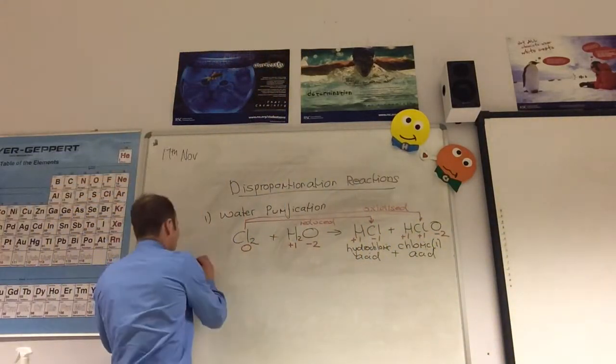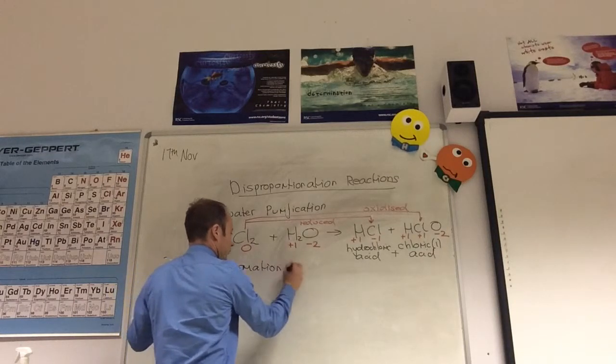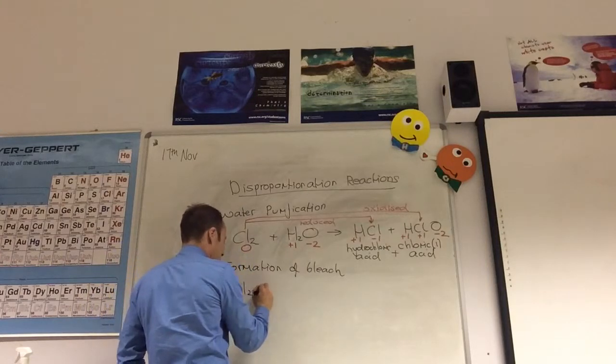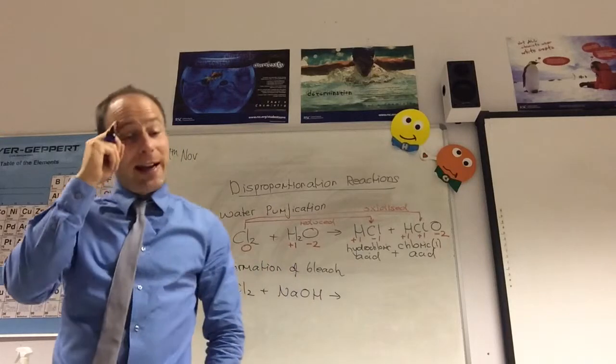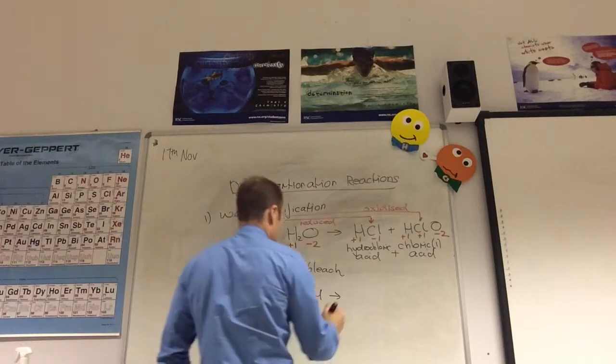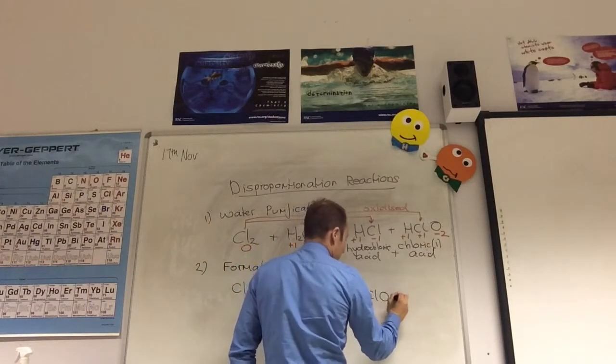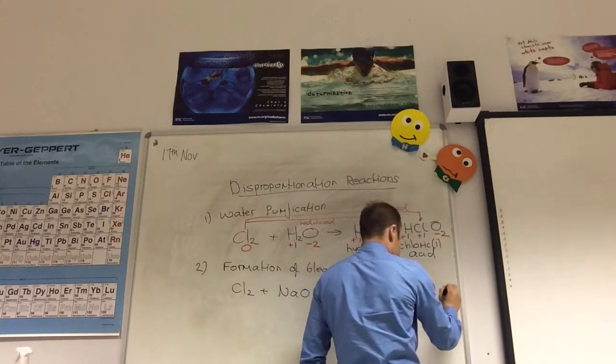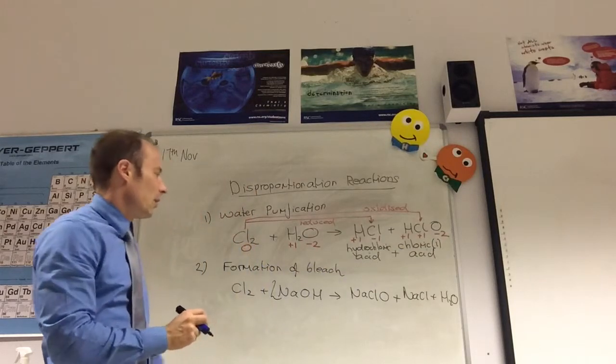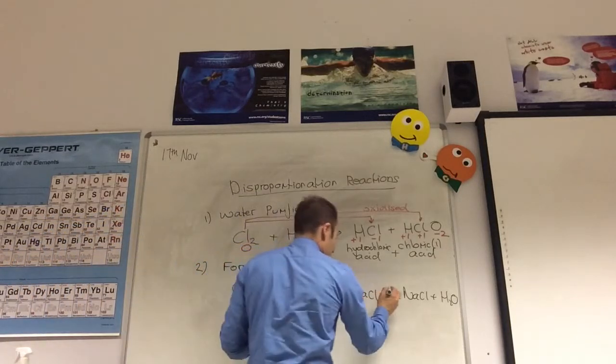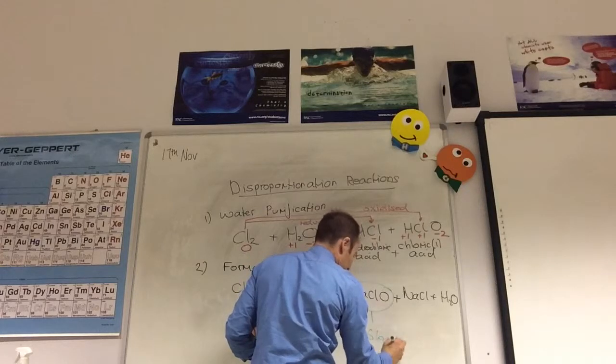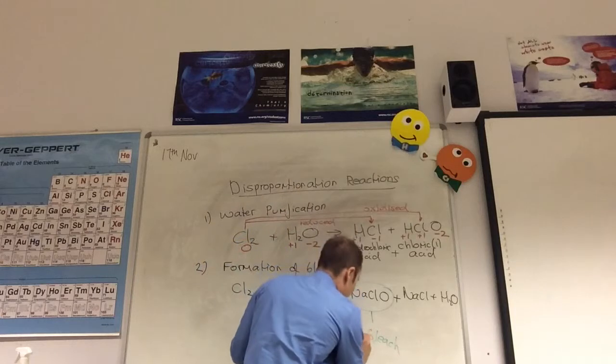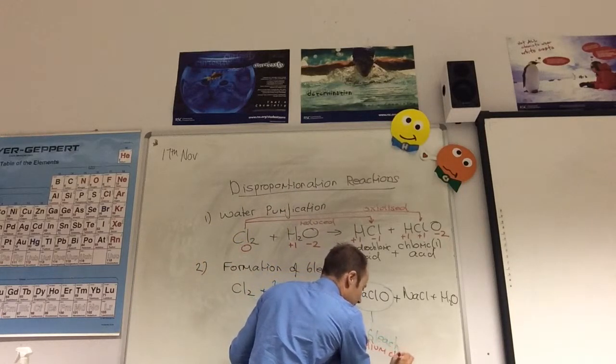And again, to make bleach, you start off with chlorine, but you react it now with sodium hydroxide solution. And if you do that, you get a disproportionation reaction. You make NaClO. You're also going to make, you need two Na, so you need NaCl and H2O. And you're going to need two of those. By the way, that is bleach. NaClO is bleach, otherwise known as sodium chlorate(I).